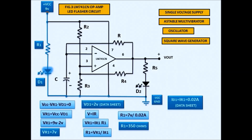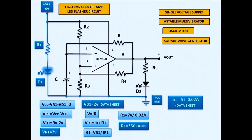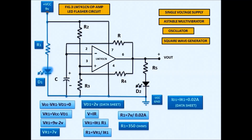We are going to use Kirchhoff's Voltage Law, which states the sum of all voltages in a closed loop is equal to zero. VCC minus V-R1 minus V-D1 equals zero. By transposition and substitution, we find the voltage drop at R1 is 7 volts. We use 2 volts for the LED as specified in the datasheet. Using Ohm's law, V equals IR, we get 7 volts divided by 0.02 amperes.